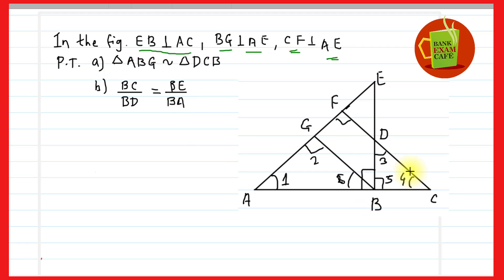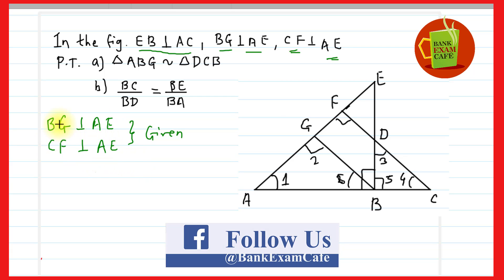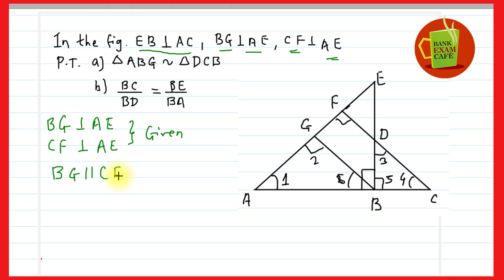It is given that BG is perpendicular to AE and CF is perpendicular to AE. We know that when perpendiculars are drawn on the same line, they are parallel to each other. Therefore, BG and CF are both perpendicular to AE, and therefore BG is parallel to CF.